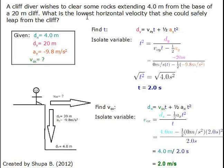Our question given is a cliff diver wishes to clear some rocks extending 4.0 meters from the base of a 20 meter cliff. What is the lowest horizontal velocity that she could safely leap from the cliff?